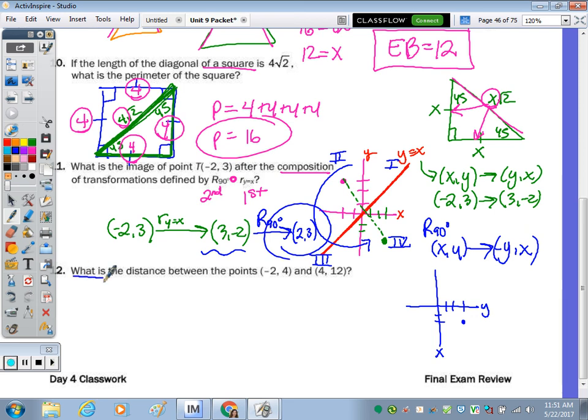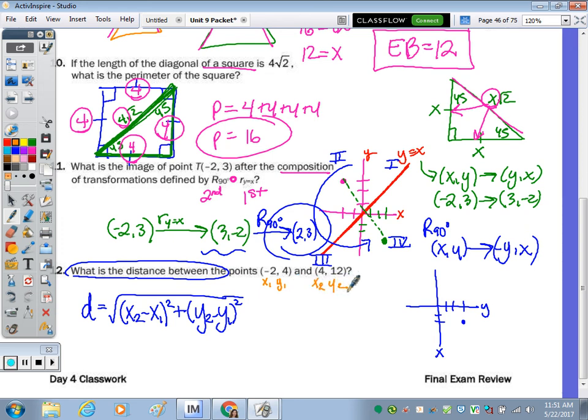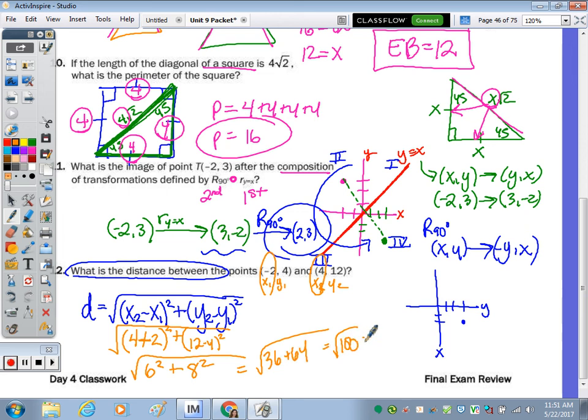Distance formula, this should be easy on your final. The distance D equals the square root of (x₂ - x₁)² plus (y₂ - y₁)². So it's 4 minus negative 2 squared plus 12 minus 4 squared. Don't forget to carry the radical. When you subtract a negative, it turns to positive. Square root of 6² plus 8², which equals 36 and 64, which is the square root of 100, which is 10.